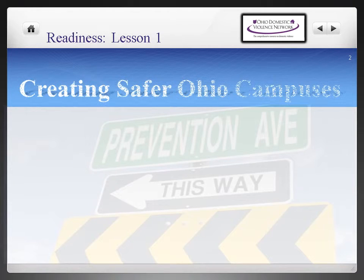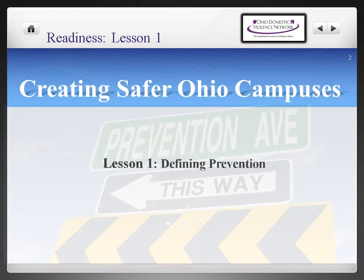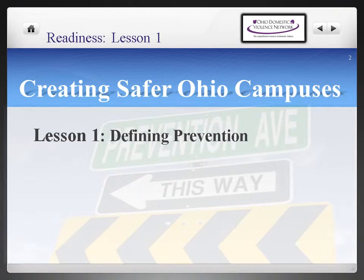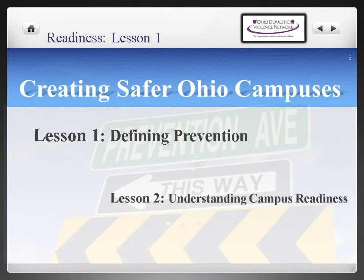Creating Safer Ohio Campuses Ready for Readiness program consists of four lessons. In lesson one you'll learn about the definition of prevention and you'll gain an understanding of the nine levels that are necessary in order to prepare your campus for implementing relationship and sexual violence prevention efforts.